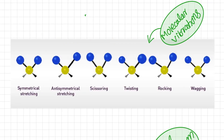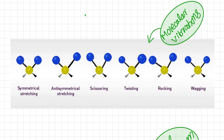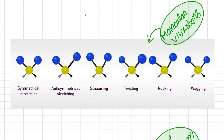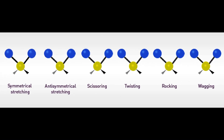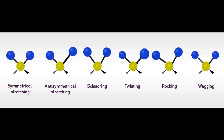Molecular vibrations observed in the IR spectrum are of two types: stretching vibrations and bending vibrations. Stretching vibrations are of two types: symmetrical and asymmetrical. Bending vibrations include scissoring, twisting, rocking, and wagging. The diagram here shows how symmetrical and anti-symmetrical stretching occurs.